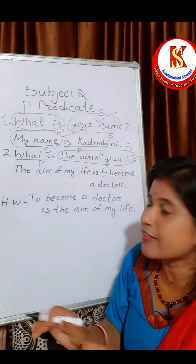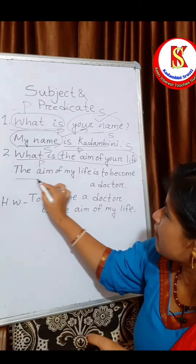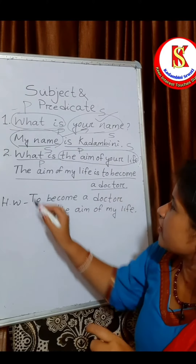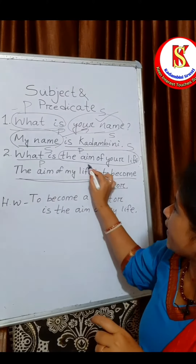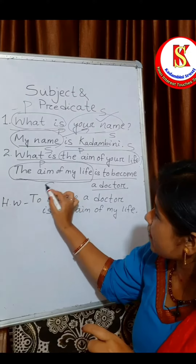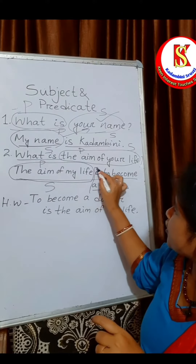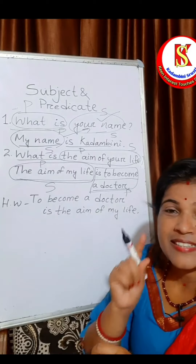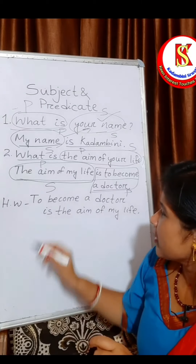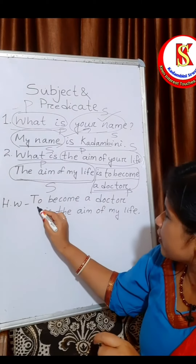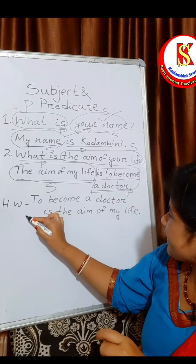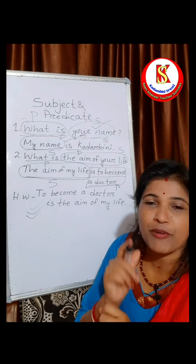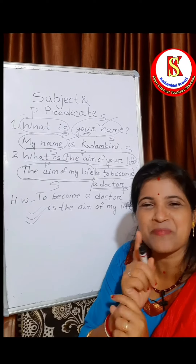How? If we find out the answer: the aim of my life is to become a doctor. So 'the aim of my life' is the subject and 'to become a doctor' is the predicate. Now, one homework for all of you — if the sentence is 'To become a doctor is the aim of my life,' find out the subject and predicate.